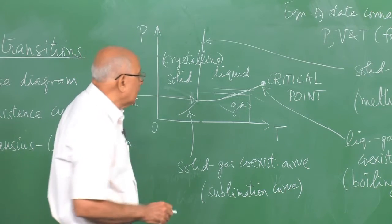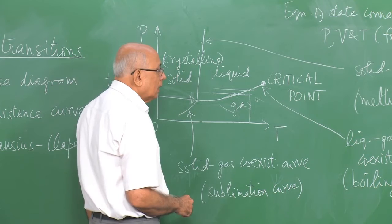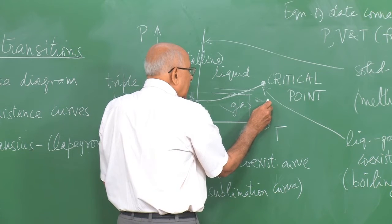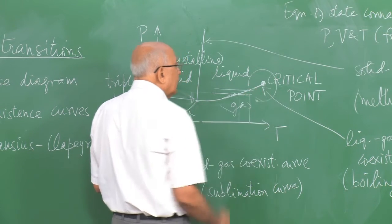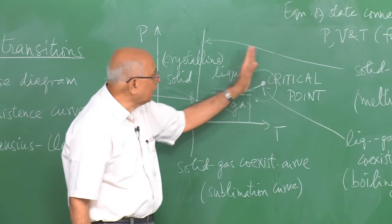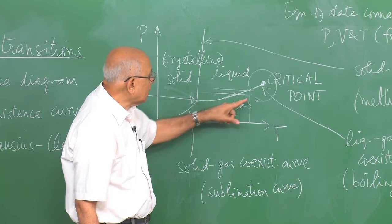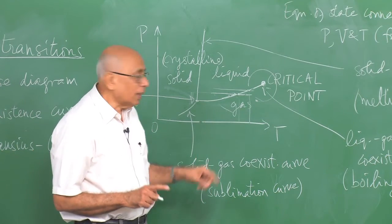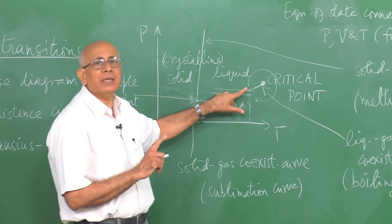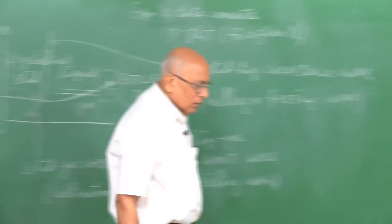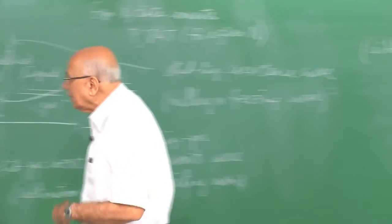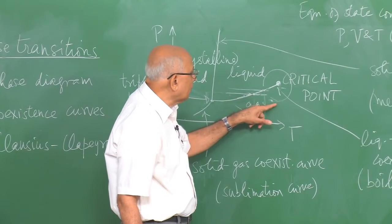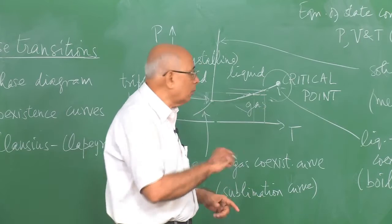This means that starting from a point in the gas phase, you can by a sequence of equilibrium states move around the critical point — going above it and returning by decreasing pressure and temperature — reaching the liquid phase without crossing any sudden transition or boiling point. You can go from the gas phase continuously to the liquid phase by going around the critical point in the P-T plane. Beyond the critical point the distinction between liquid and gas vanishes.